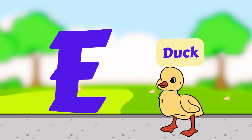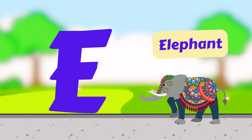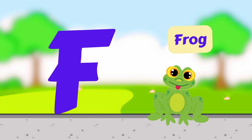D is for Duck. D, D, Duck. E is for Egg. E, E, Egg. E is for Elephant. E, E, Elephant.